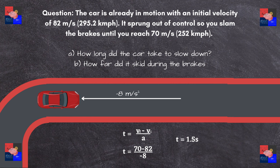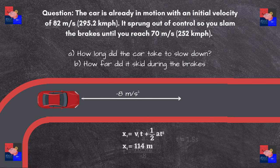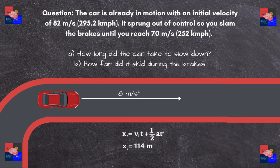So for part B, we use the position equation. Here we will not use the first term, but we will use the second term, vi times t, because the car was already in motion. So we take 82 meters per second times 1.5 seconds plus one half of negative 8 meters per second squared times 1.5 seconds squared, and we get 123 meters minus 9 meters, which is 114 meters.